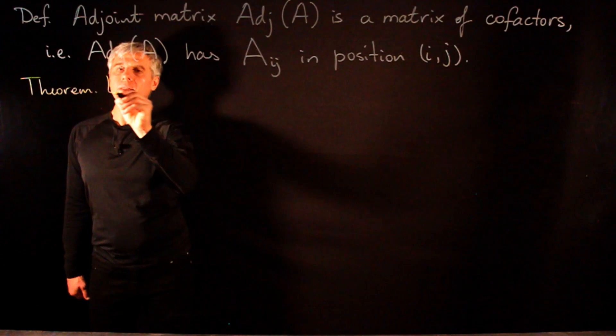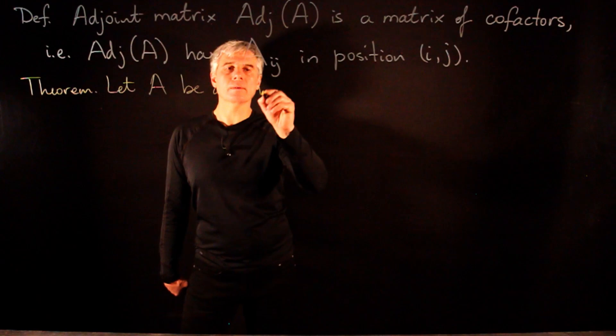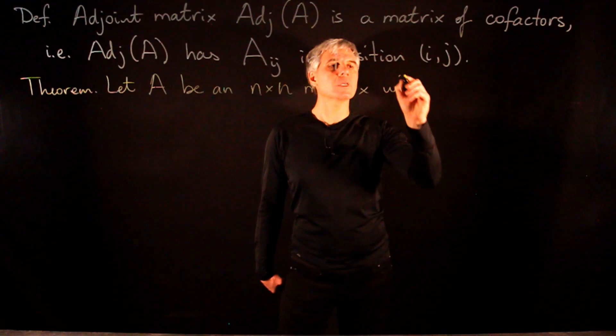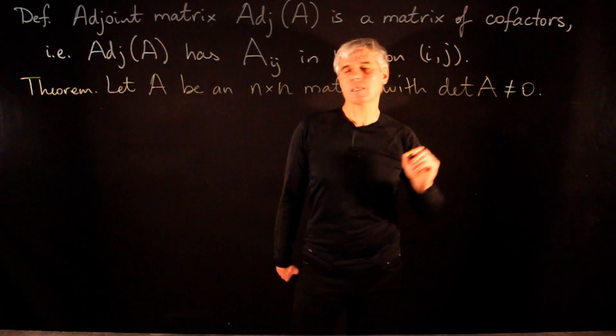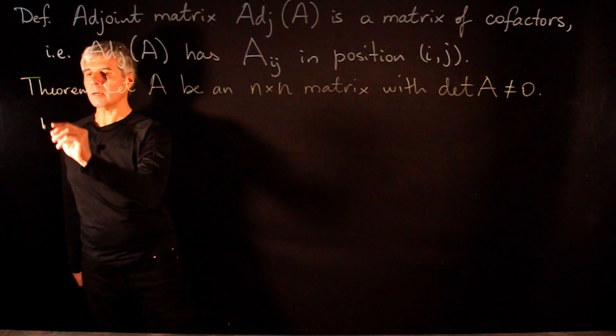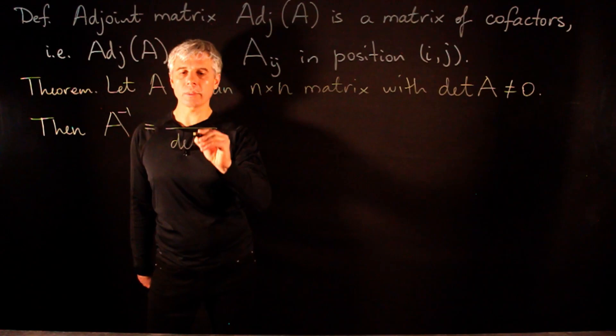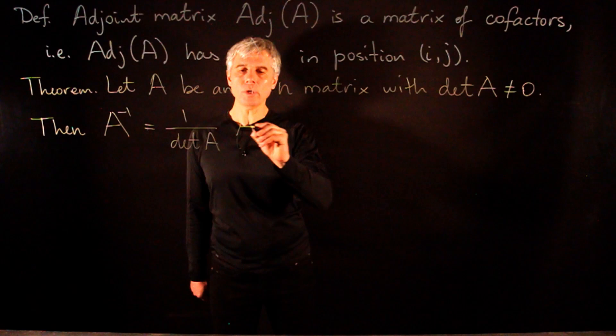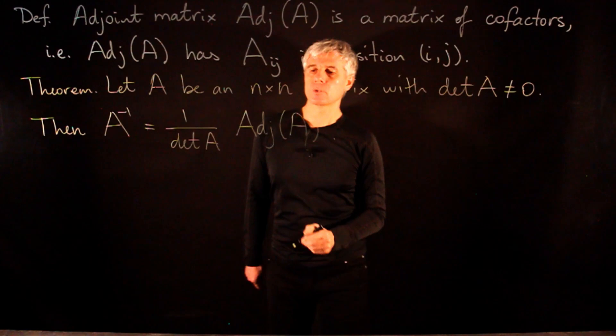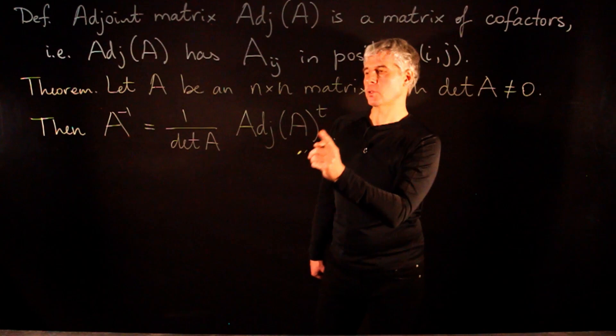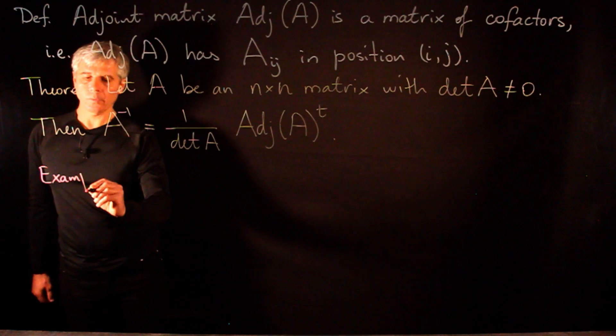Let us state the following theorem. Let A be a square n by n matrix with a non-zero determinant; such a matrix is invertible. We can write the formula for the inverse: A inverse is equal to 1 over the determinant of A times the transpose of the adjoint matrix of A. So we compute the adjoint matrix, take its transpose, and divide by the determinant.